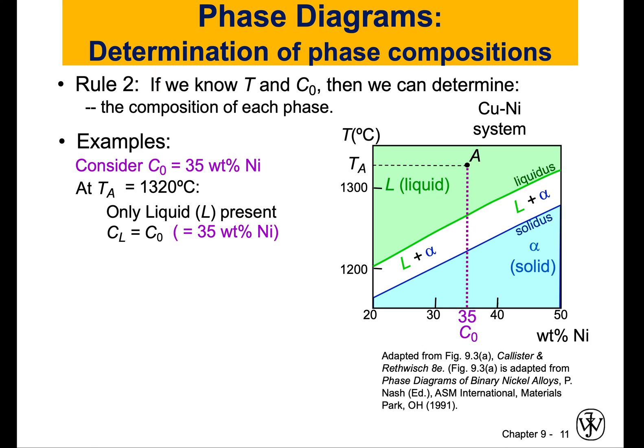So if I asked you: if I'm at point A, what is the composition of that phase? I only have one phase, which is the liquid. How is this phase made in terms of nickel and copper? As long as we are in the green area, it's one phase — everything is simple and very easy. I still have 30% nickel and 65% copper. So my composition of the liquid phase is 35% nickel and 65% copper. Simple.